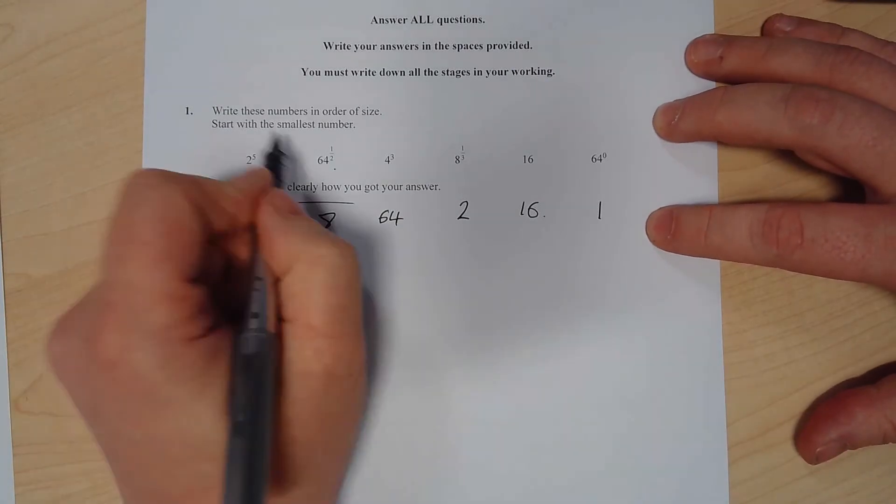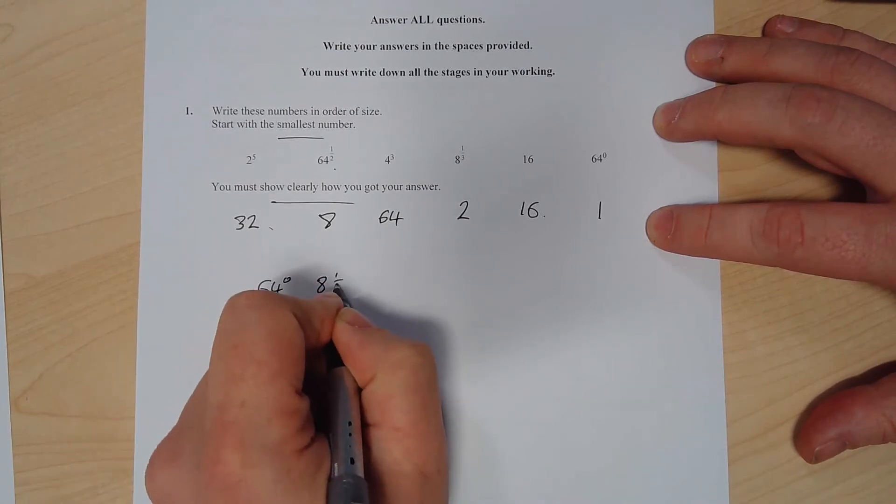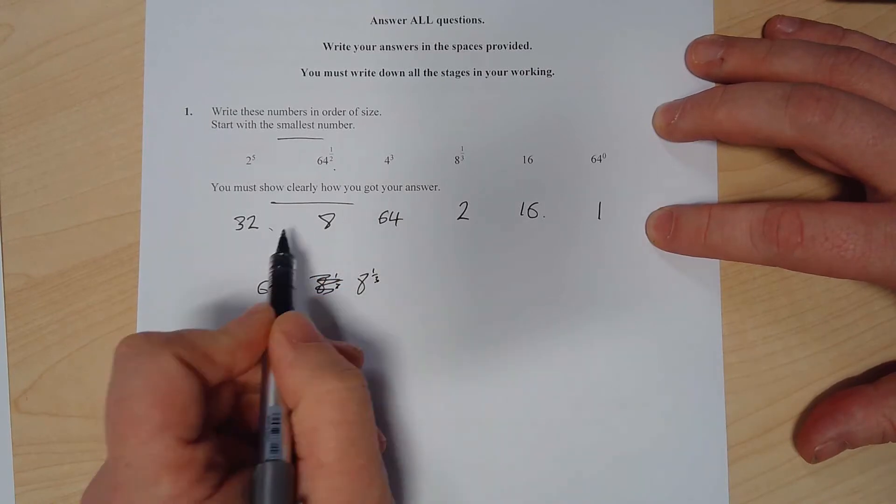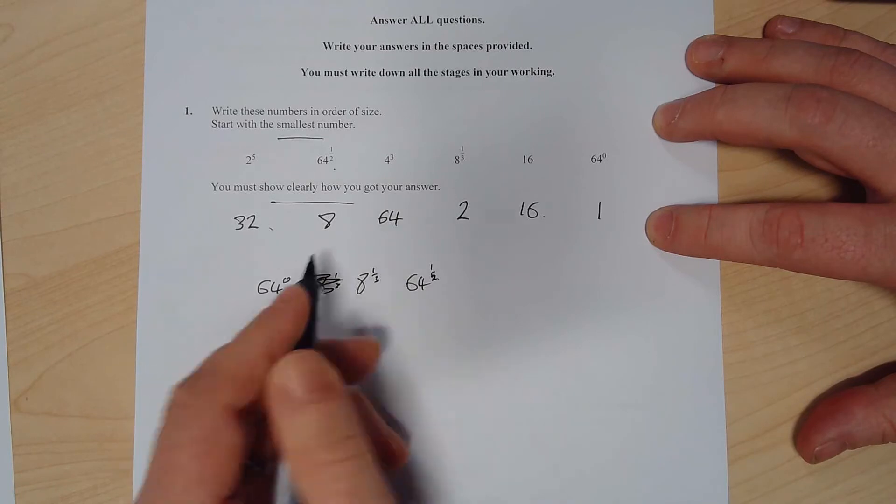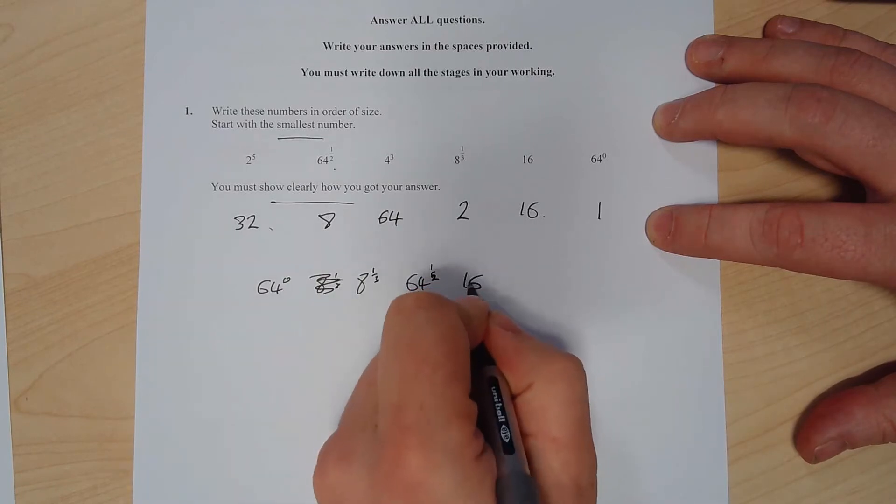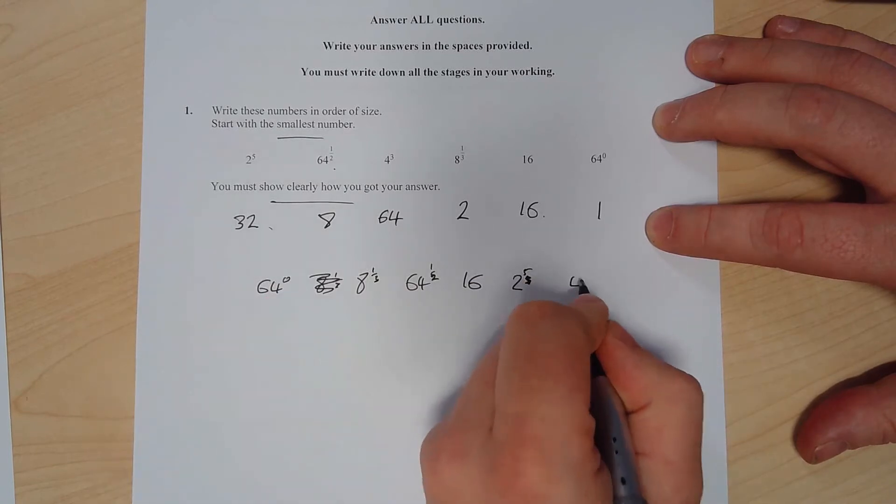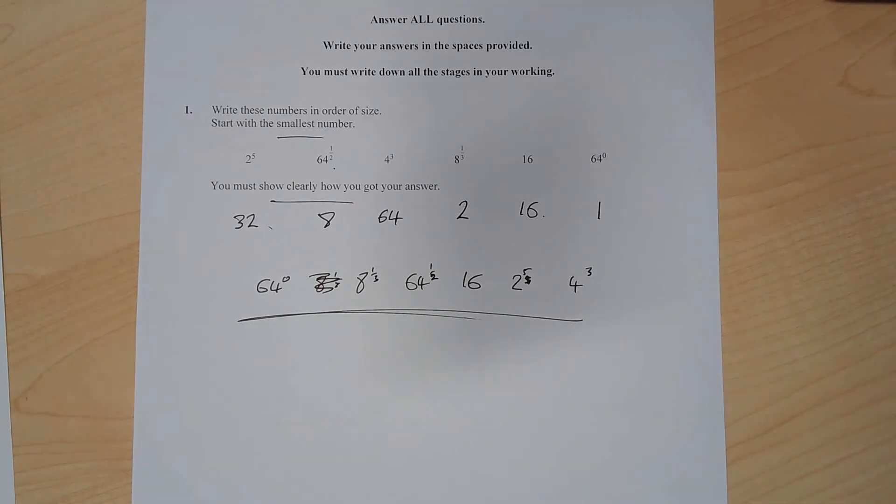So: 64 to the 0, 8 to the 1/3, 64 to the 1/2, 16, 2 to the 5, and 4 to the power 3. So in order of size from smallest to largest, that's what you've got. It's important to notice that because it's non-calculator, you do need to know how to do these without being able to tap them in.